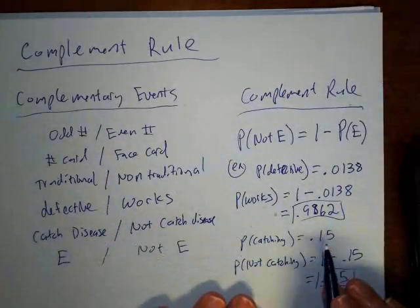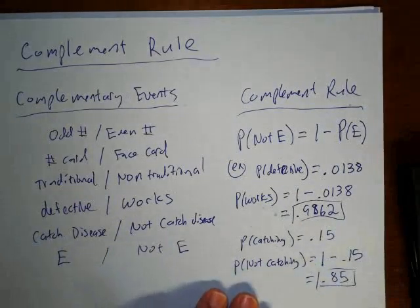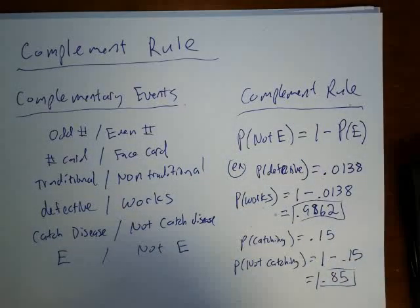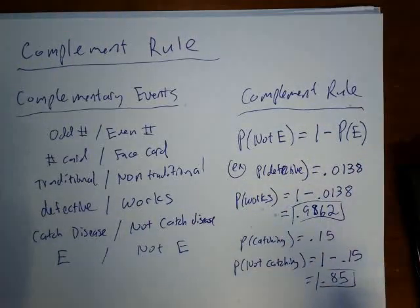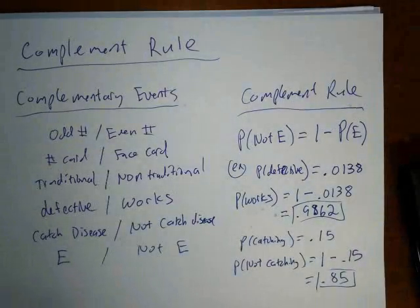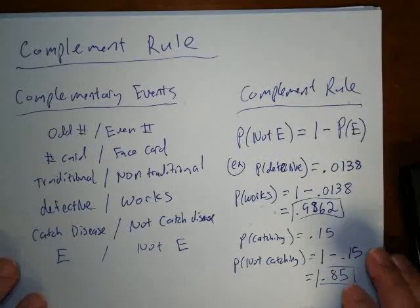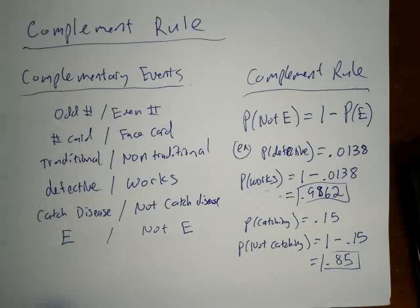If there's a 15% chance of catching a disease, there's an 85% chance of not catching it — they add up to 100%. In decimal terms, the complement rule says: if you know one probability, subtract it from 1 to get the complement. In the next video, we're going to look at how to find probabilities when rolling two dice.